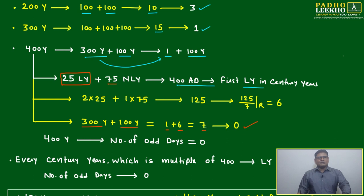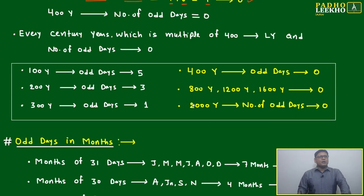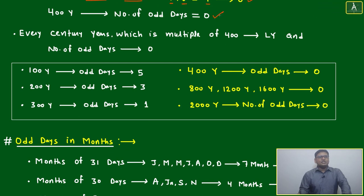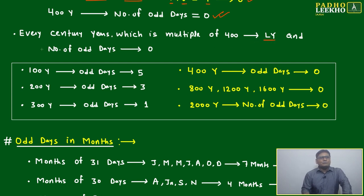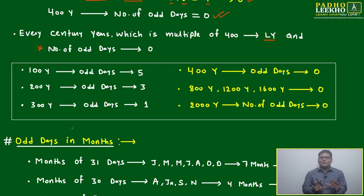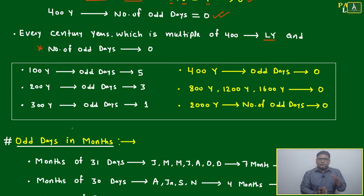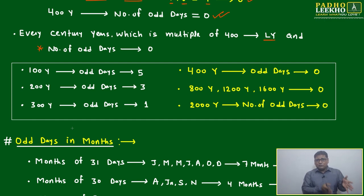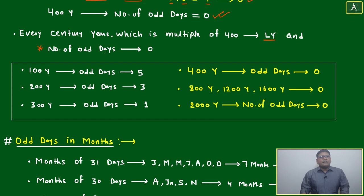With 400 years having 0 odd days, every century year that is a multiple of 400 is a leap year and has 0 odd days. So 400 AD, 800, 1200, 1600 — all have 0 odd days. This is the derived concept. Questions won't be this direct — they will be twisted — but once you understand this, you can move from leap year to non-leap year and handle questions about birthdays, meetings, and future dates.